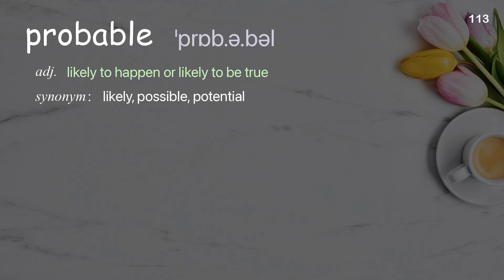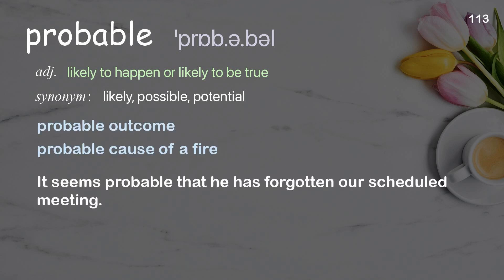Probable: Likely to happen or likely to be true. Examples: Probable outcome. Probable cause of a fire. It seems probable that he has forgotten our scheduled meeting.